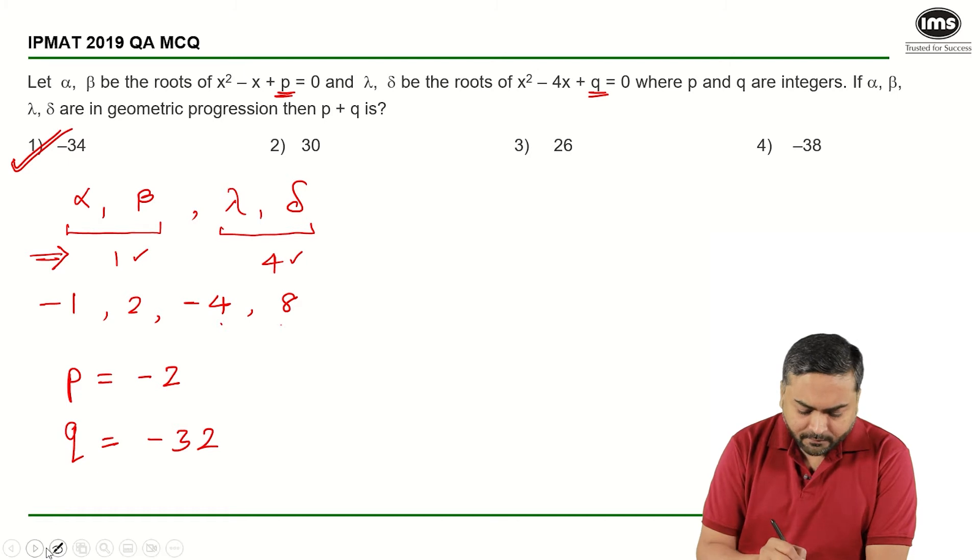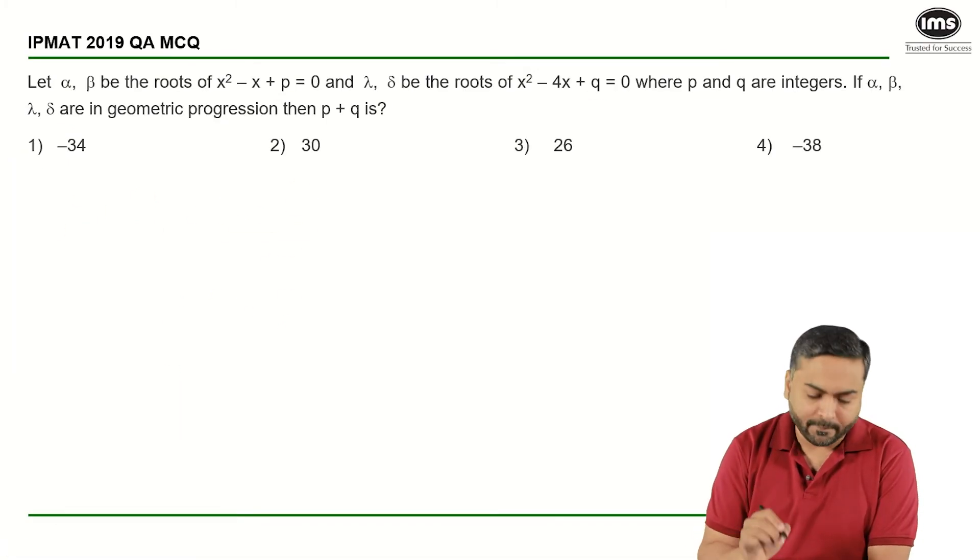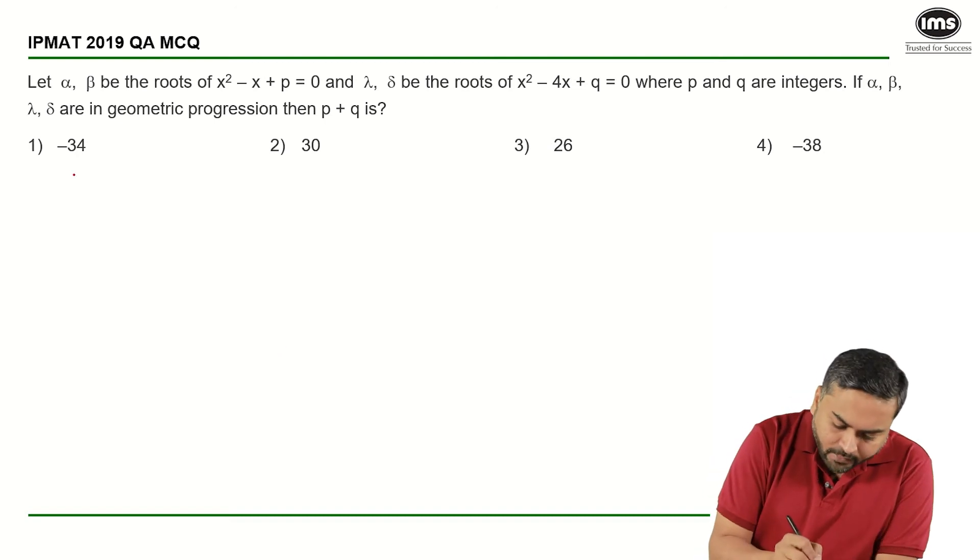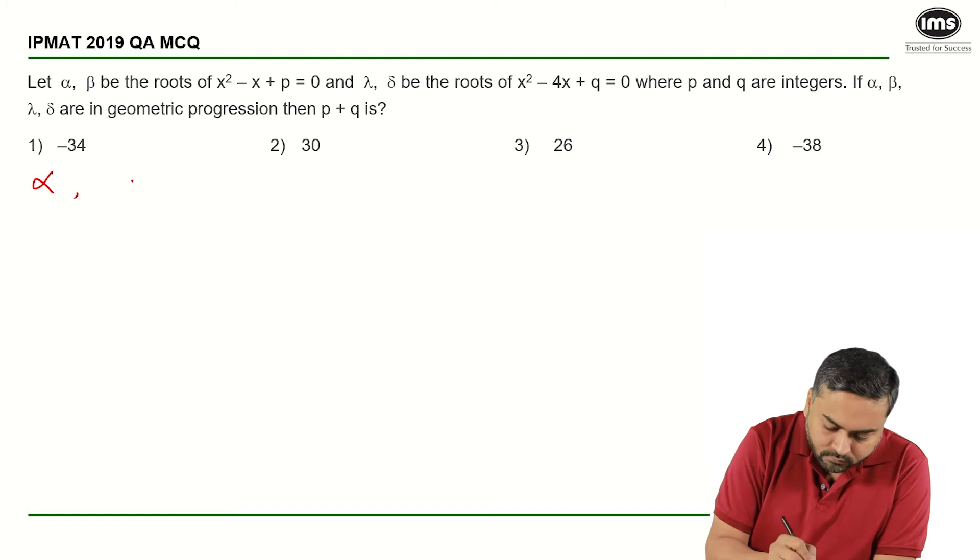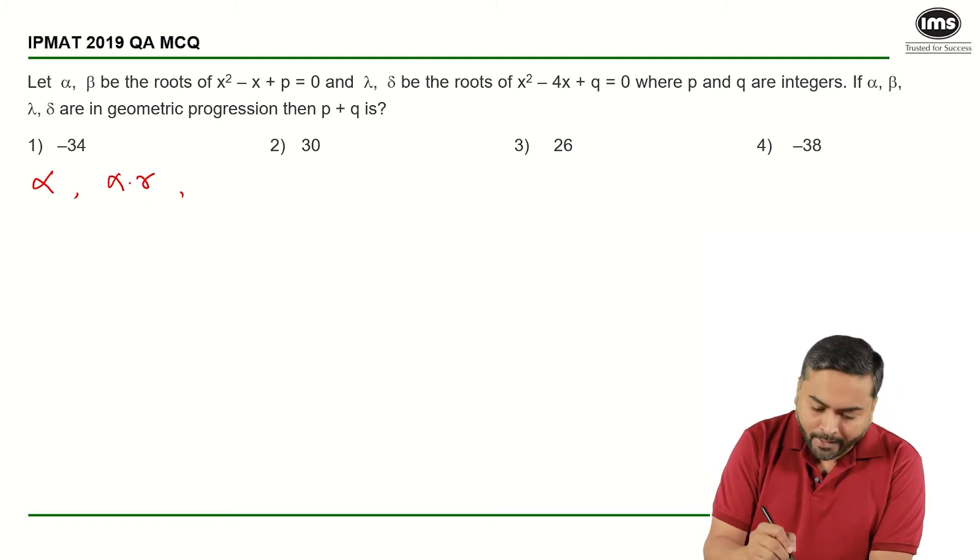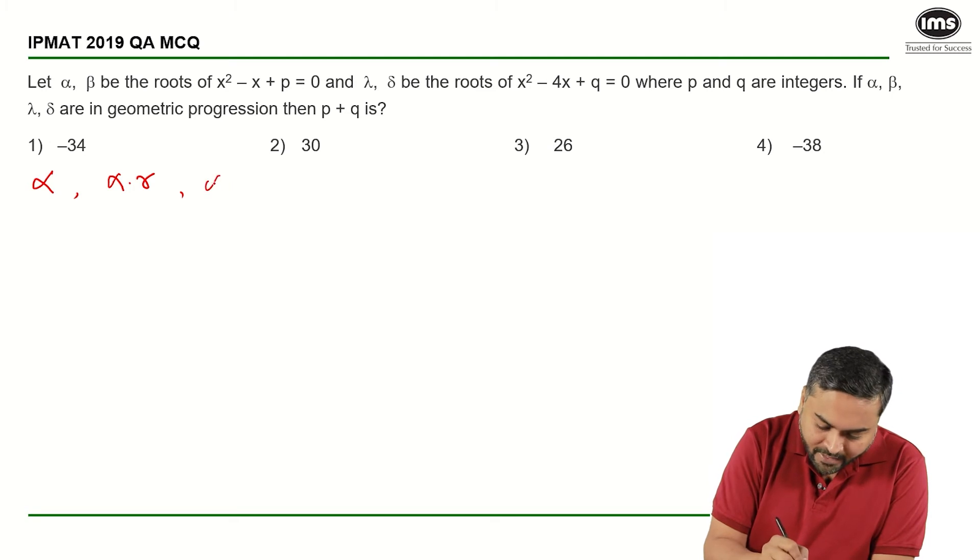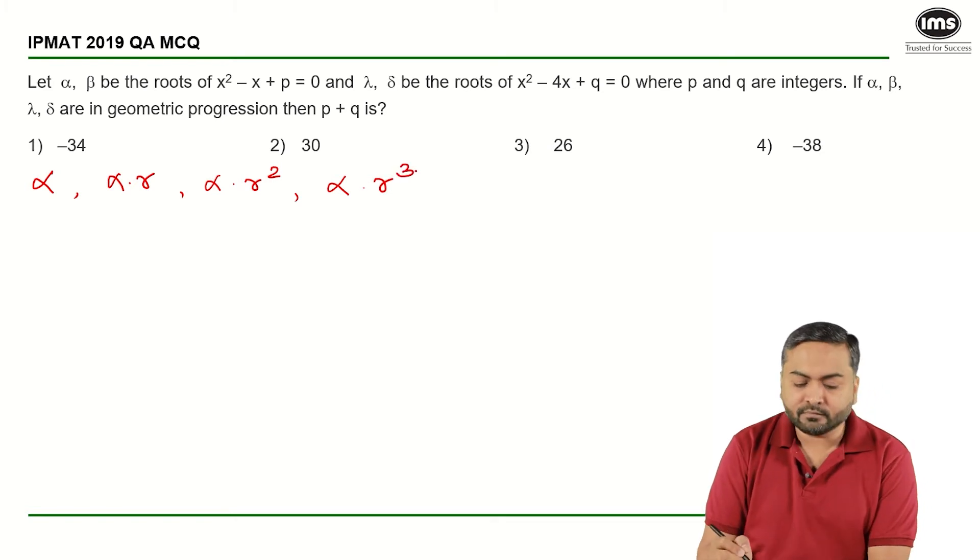But let us see how we can solve this question mathematically. If the first root is alpha, then the value of beta will be alpha into R. The value of gamma will be alpha into R square and the value of delta will be alpha into R cube.